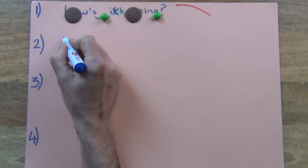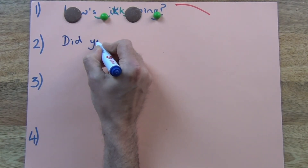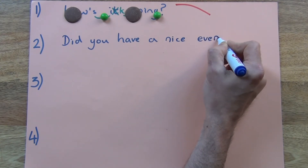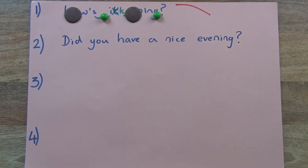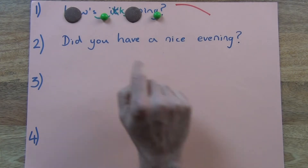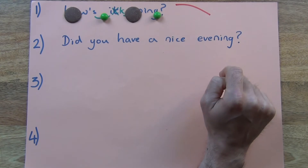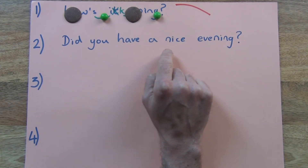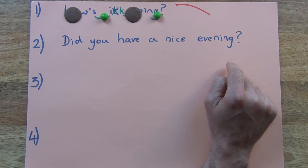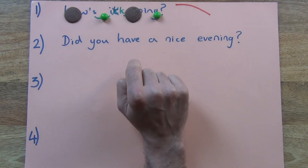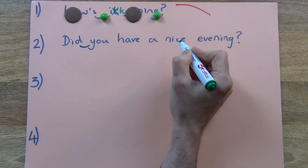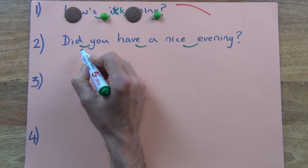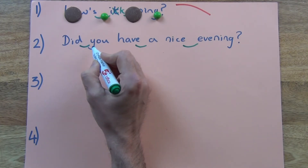Question number two looks like this. Listen: did you have a nice evening? Listen again and repeat after me: did you have a nice evening? Now you try. Now, in this question we have some linking. Listen to this part and try to understand what sound I make to link these words together.